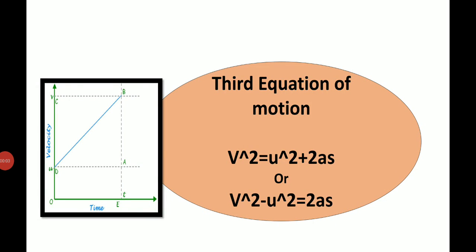Welcome everyone, this is Poonam. In this session we are going to study about our third equation of motion, that is v square equals u square plus 2as, or v square minus u square equals 2as. In the previous two classes we discussed the first and second equations.